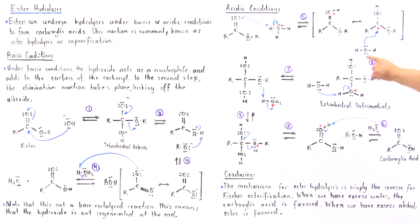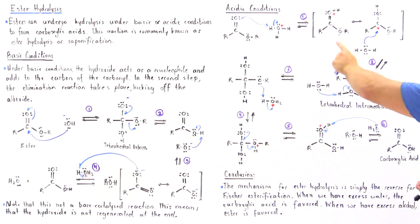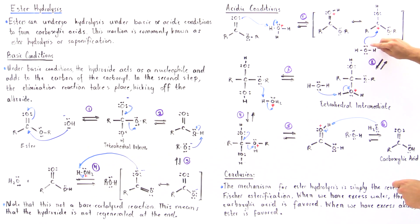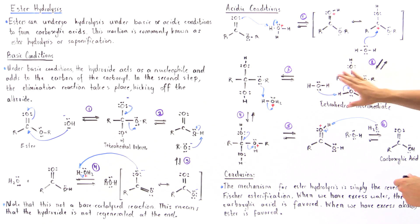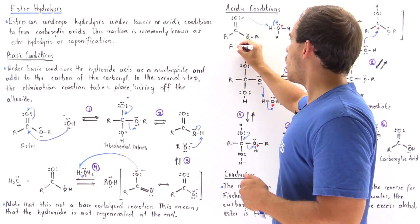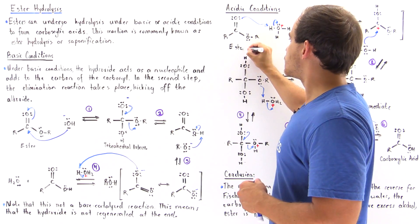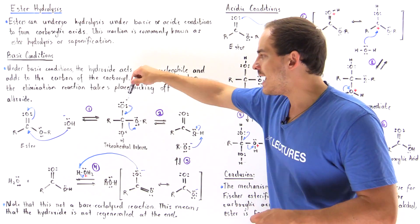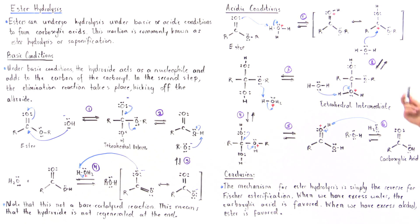In step number two, because we now have a strong Lewis acid, it can react with water, our relatively weak nucleophile, the Lewis base. These two electrons attack this carbon, forming a tetrahedral intermediate that contains a positive charge on this oxygen. Notice the resemblance to the base-catalyzed mechanism — there the tetrahedral intermediate contained a negative charge on the oxygen, but under acidic conditions, the tetrahedral intermediate contains a positive charge on this oxygen.